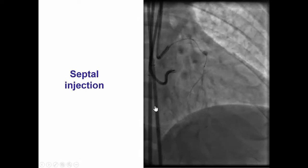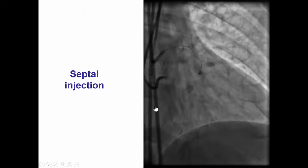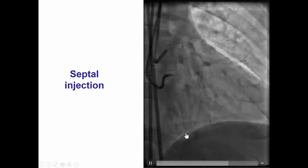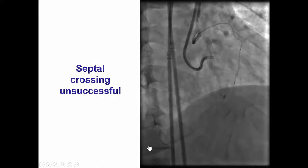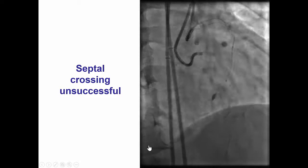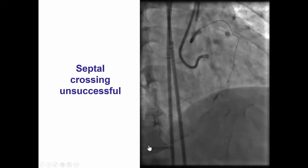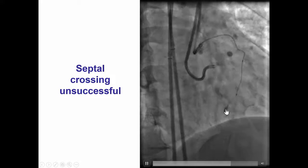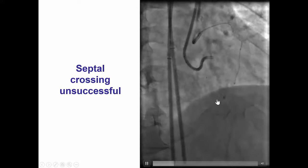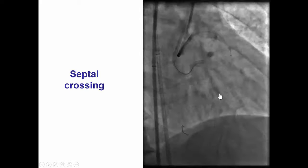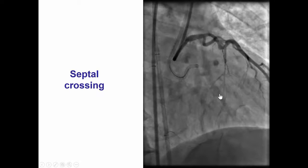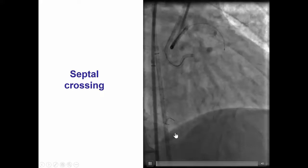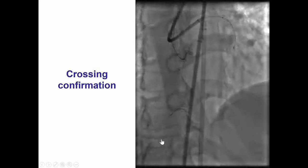As a result, we decided to switch to retrograde. We performed a retrograde septal injection showing some connection with the PDA. The initial crossing attempts caused a small septal hematoma, which was not a problem as we have seen in the vast majority of those hematomas. We were subsequently able to cross with the Fielder FC guide wire into the posterior descending artery.